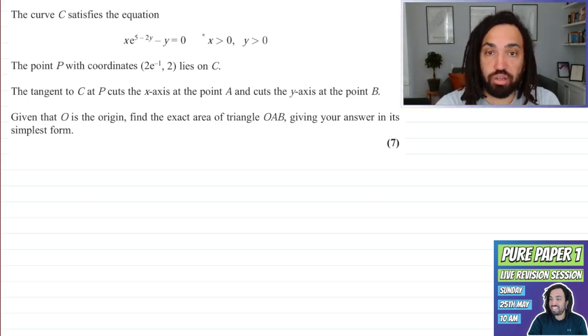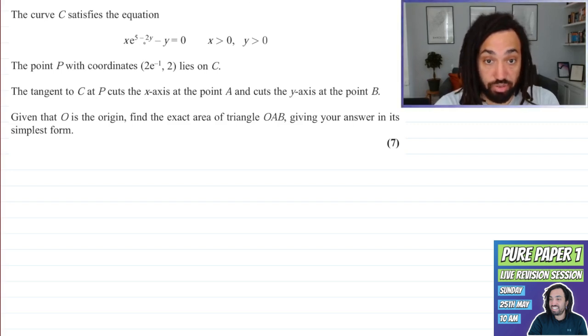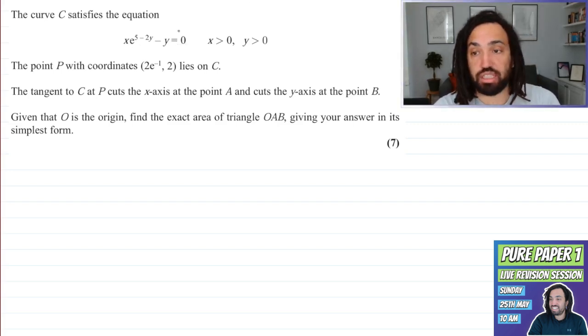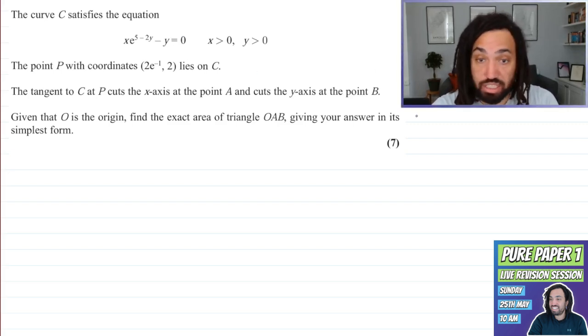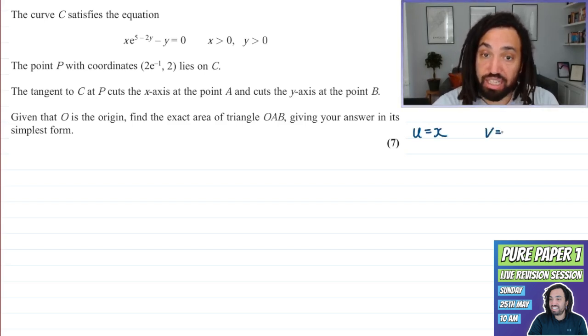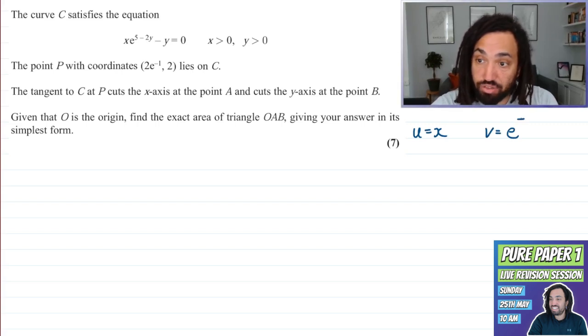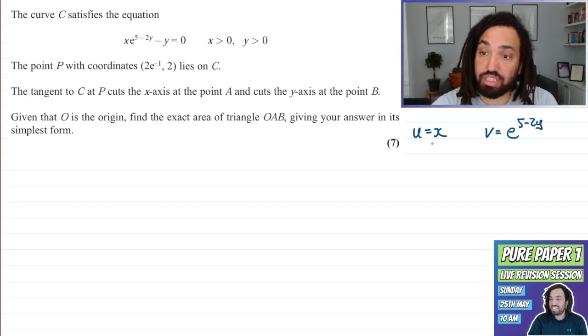Okay, so here we go. What I'm going to do is first off differentiate this so that we can work out the tangent. Now in order to differentiate it, the first term is a product. So I'm going to write U is equal to X and I'm going to write V is equal to E to the 5 minus 2Y and use the product rule.